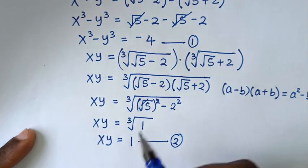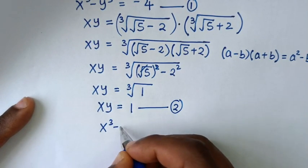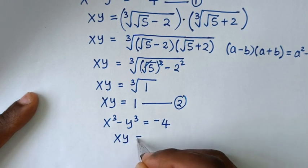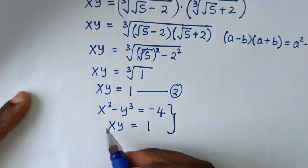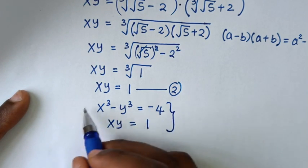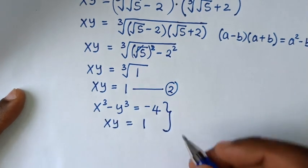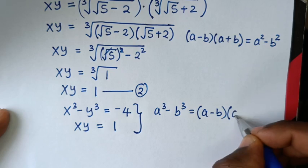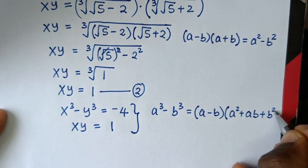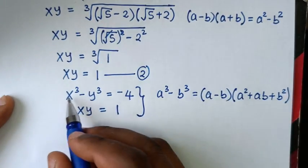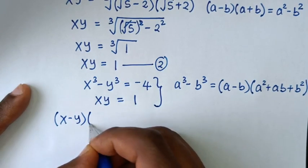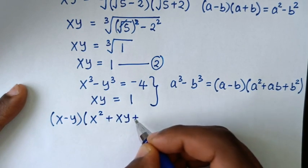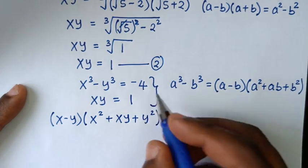Then we'll solve equation 1 with equation 2. From equation 1, x³ − y³ = −4. The left side is in the form a³ − b³ = (a − b)(a² + ab + b²). So applying the rule: (x − y)(x² + xy + y²) = −4.